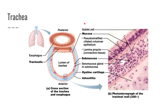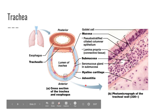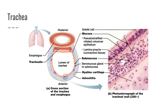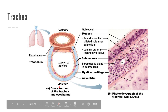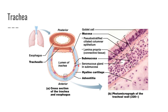Here's a picture of the layers of the tracheal wall. So our mucosa with our ciliated columnar cells, the submucosa down here, and then the outer layer, the adventitia.